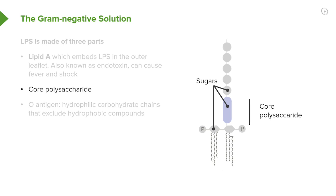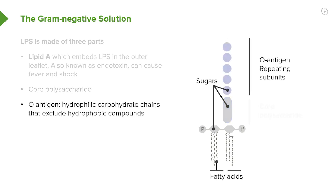LPS is also made up of a core polysaccharide, which is shown here. And then finally, on the outermost edge of the molecule, there are repeating subunits of what we call O antigen — these are hydrophilic carbohydrate chains. They exclude hydrophobic compounds, the dangerous ones.